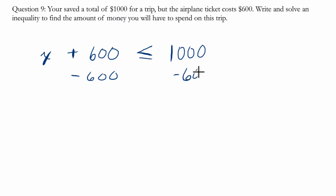we just subtract 600 from both sides, and we know the amount of money we'll have to spend has to be less than or equal to $400.